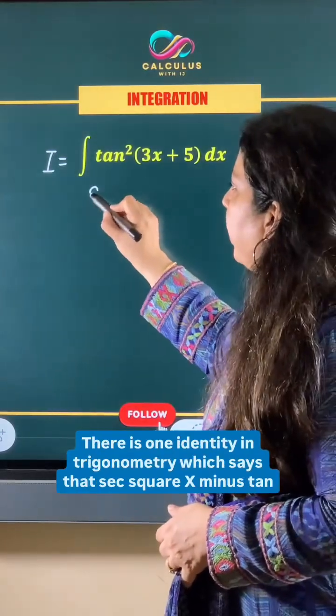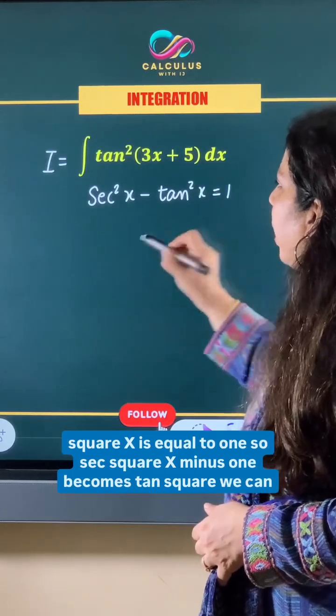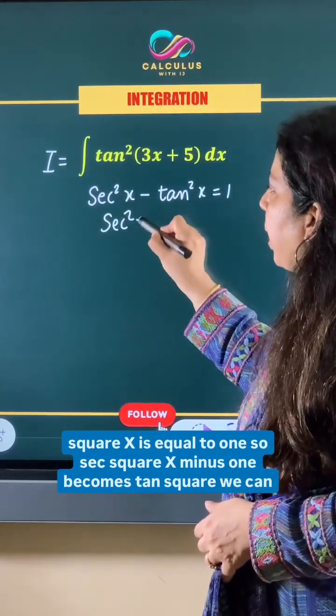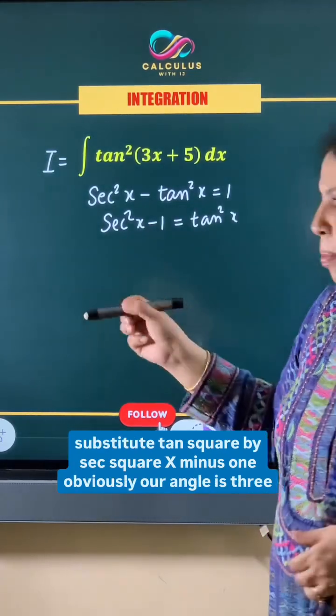There is one identity in trigonometry which says that sec²x - tan²x = 1. So sec²x - 1 becomes tan². We can substitute tan² by sec²x - 1.